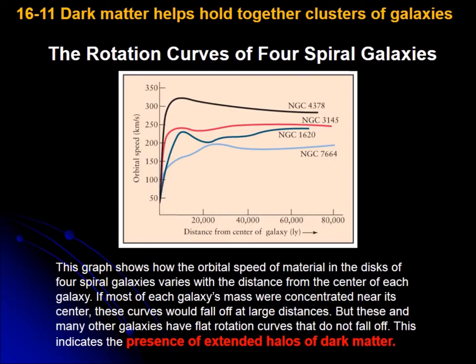We begin in section 11 by looking at the distribution of speeds that different stars have in four galaxies. Here we have four spiral galaxies — the New Galaxy Catalog 7664 and so on. These lines correspond to the speeds that the stars have as a function of how far they are from the center of the galaxy. We can see these four curves have similar behaviors: they move up, then get steady, and continue being steady as they move away from the center.